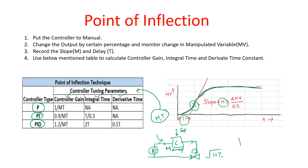The main drawback of the point of inflection method is that identifying the point of inflection is difficult in practice. In reality, the process response will have oscillations and noise, making it hard and subjective to locate the exact point of inflection.